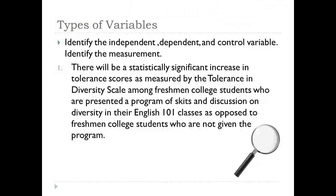What's the dependent variable — the response variable? Hopefully you said tolerance scores. Level of tolerance is the dependent variable. In this hypothesis, the dependent variable is operationally defined — remember, an operational definition is how you're going to measure that dependent variable. So how are we going to measure tolerance scores? As you can see here, it says, as measured by the tolerance and diversity scale. So the tolerance and diversity scale is the operational definition for tolerance scores.